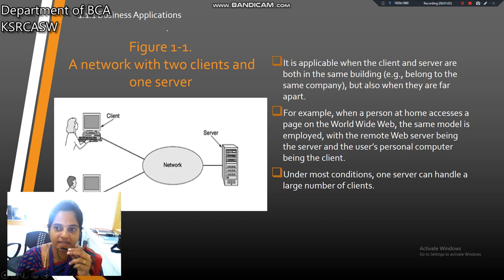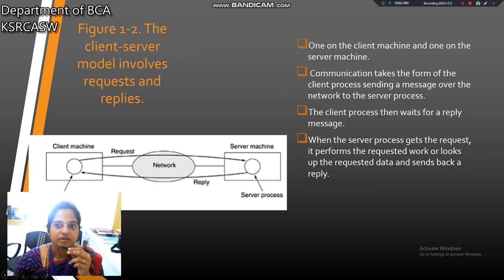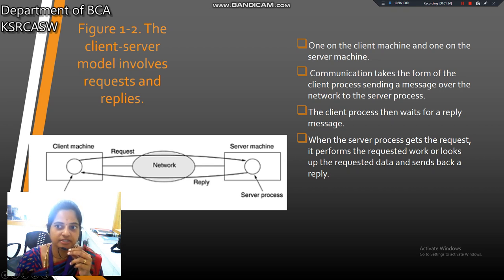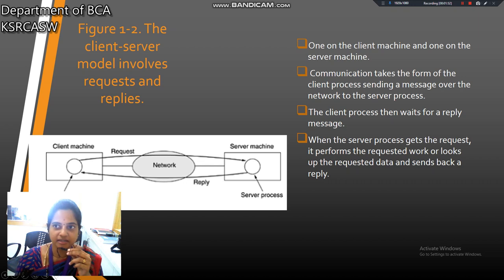For example, when a person at home accesses a page on the world wide web, the same model is employed with the remote web server being the server and the user's personal computer being the client. Under most conditions, one server can handle a large number of clients. The client-server model involves request and reply — one on the client machine and one on the server machine. Communication takes the form of the client process sending a message over the network to the server process, then waits for a reply message. When the server process gets the request, it performs the requested work or looks up the requested data and sends back a reply.